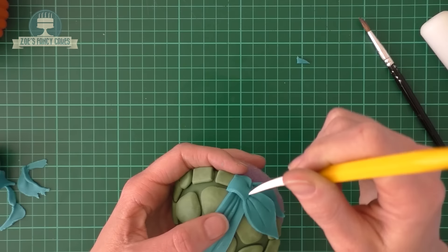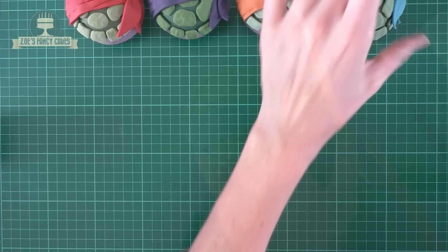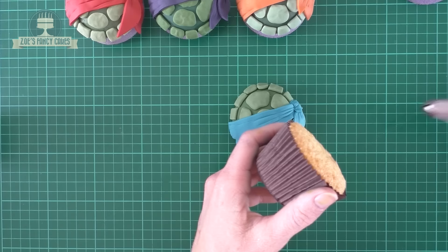You can do these in all the same color or all completely different colors. I tried to make each shell a little bit different. I've done one for each of the turtles and I've left mine overnight so they've gone quite hard and then you can pull them off the foam.